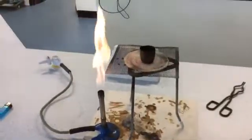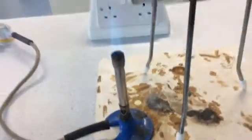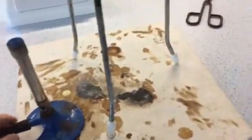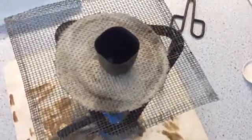So now I have my Bunsen burner on so I'm going to turn it onto the hot flame by opening up the collar to let in as much oxygen as possible. And then I'm going to place it underneath and what will happen is my magnesium will start to heat up and burn.